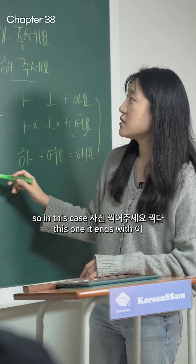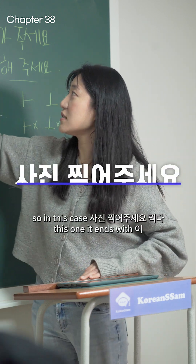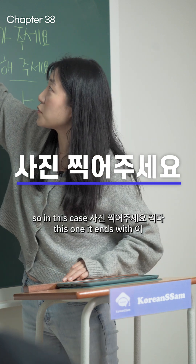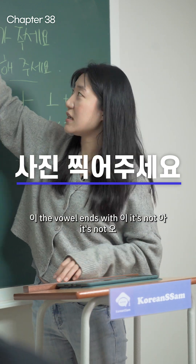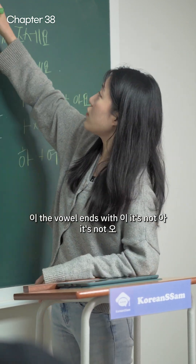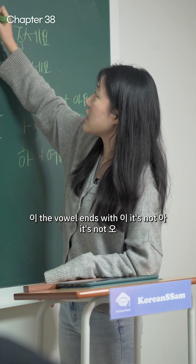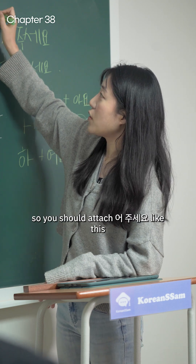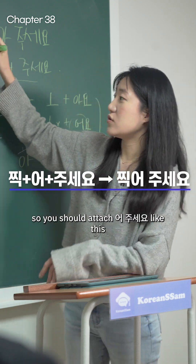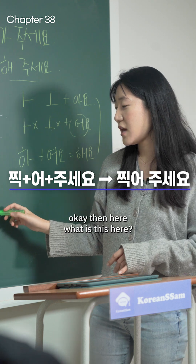So in this case, 사진 찍어주세요. For 찍다 — the verb stem's vowel ends with 이, which is not 아 and not 오 — so you attach 어, then 주세요, giving 찍어 주세요.